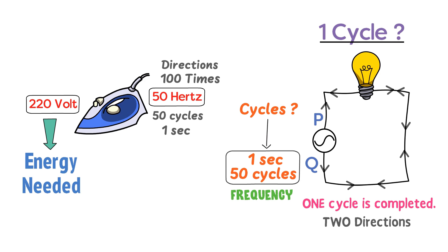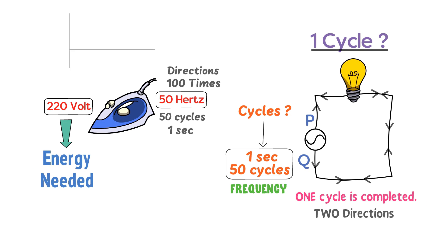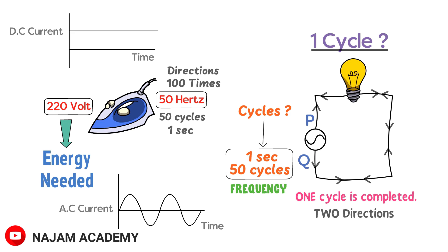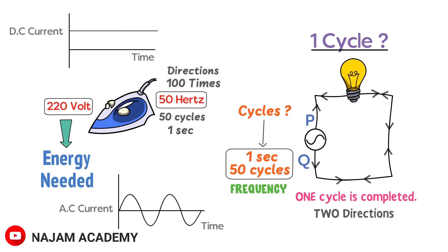That is a huge number. Also remember that DC current has no frequency. Graphically, DC current is represented as a straight line and AC current as a wave. DC current moves in one direction over time, while AC current fluctuates over time, moving in two directions. This was all about AC and DC current.